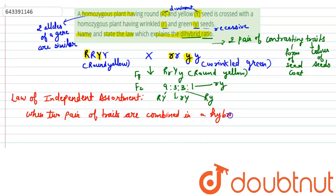Segregation of one pair of characters is independent of other pair of characters.